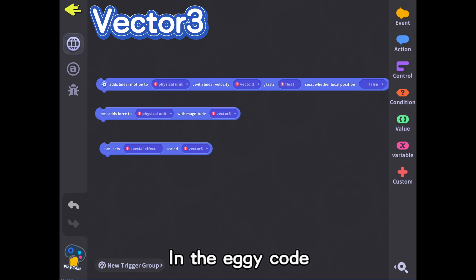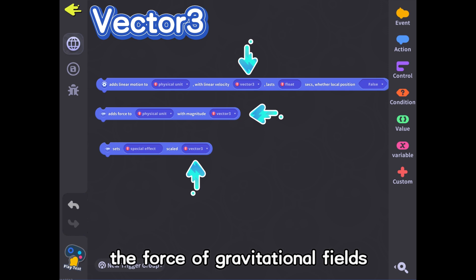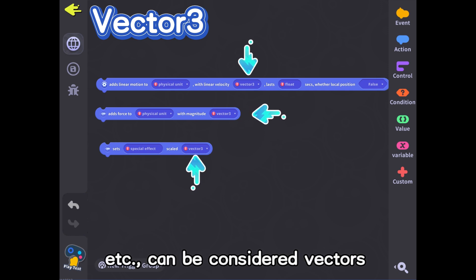In the Eggie code, the scaling of units, the linear velocity of motors, the force of gravitational fields, etc., can be considered vectors.